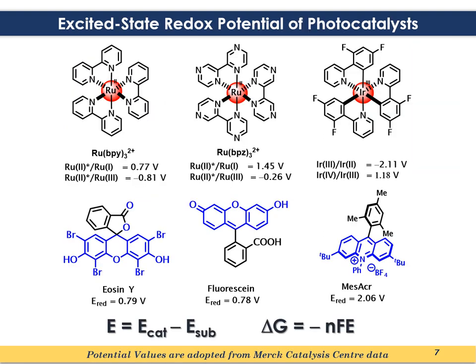Over the years, several photoredox catalysts have been designed and synthesized, and some of them are commercially available. Many of them are very reactive and can do unconventional transformations. These reactions follow thermodynamics where redox potential and free energy are crucial parameters. When comparing the reactivity of photoredox catalysts, metal-based photocatalysts are much more effective because of their stable excited states and better excited state lifetimes.